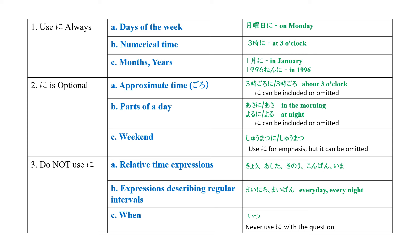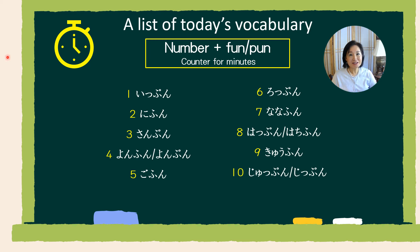But first, let's review some key time-related words and practice their pronunciation. If you're already comfortable with pronouncing words like minutes, days of the week, months, and parts of the day, feel free to skip ahead to rule number one. As we focus on the time-reference particle today, let's start by reviewing words related to time. You already know how to say o'clock — the counter for that is じ. So one o'clock is いちじ、にじ、さんじ, like that.